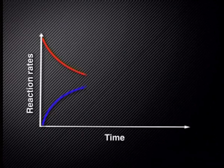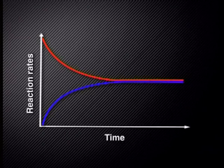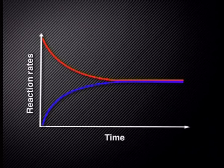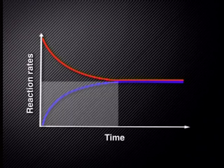Let's see what these graphs tell us. For the first graph of the rate versus time, the rate of the forward reaction is high at the start, but decreases after a while. At the same time, the rate of the reverse reaction starts from zero and then increases.